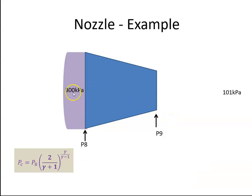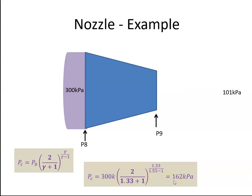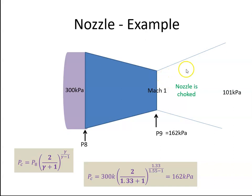If we increase the inlet pressure to 300 kilopascals with ambient pressure still at 101 kilopascals, the critical pressure becomes 162 kilopascals. Since the ambient pressure of 101 is less than the critical pressure of 162, the nozzle is choked. The pressure at the nozzle exit will therefore be 162 kilopascals, and the air will continue to expand in a diverging fashion to the right of the nozzle exit. Hopefully that gives you some intuition on nozzles.